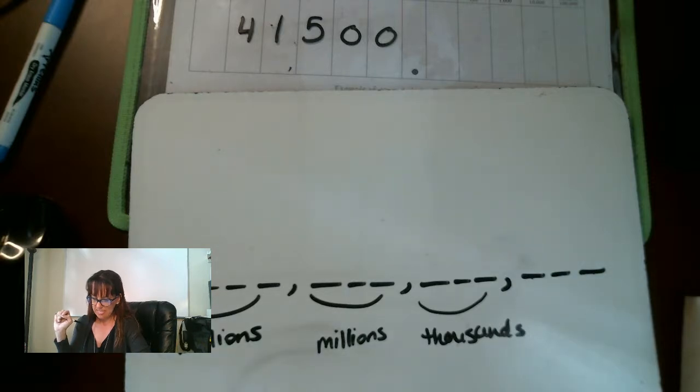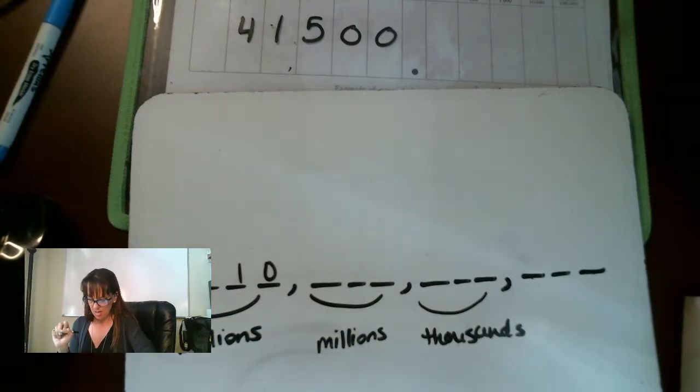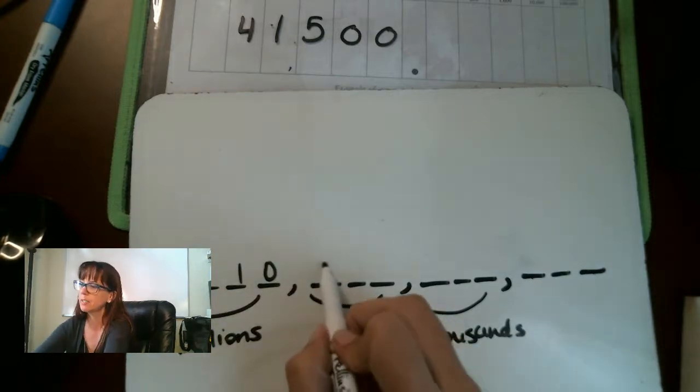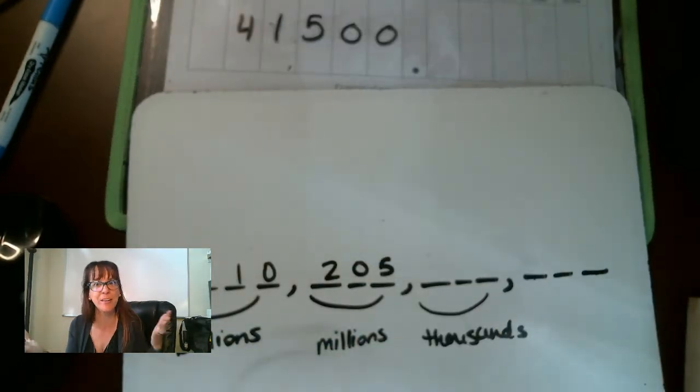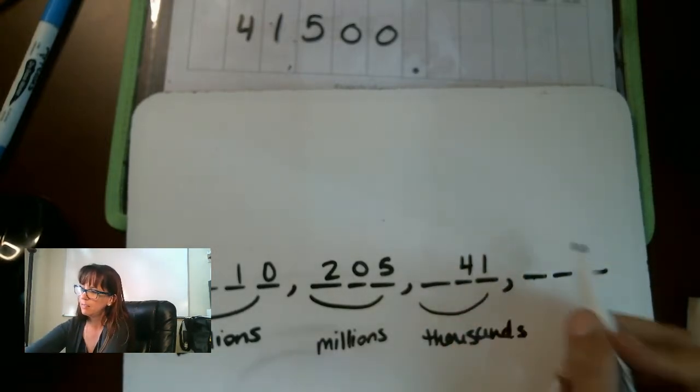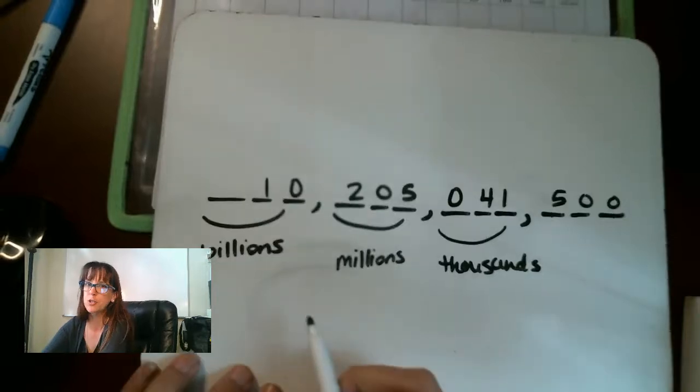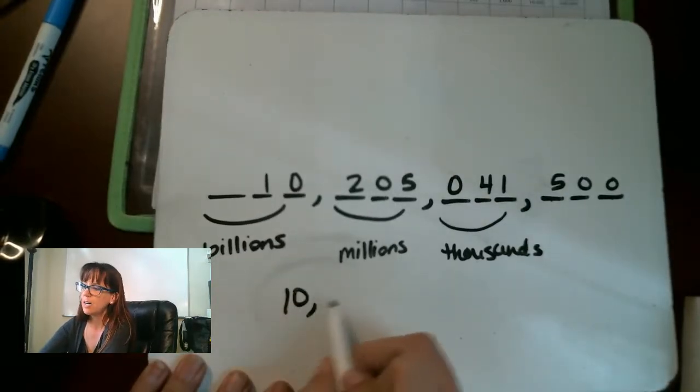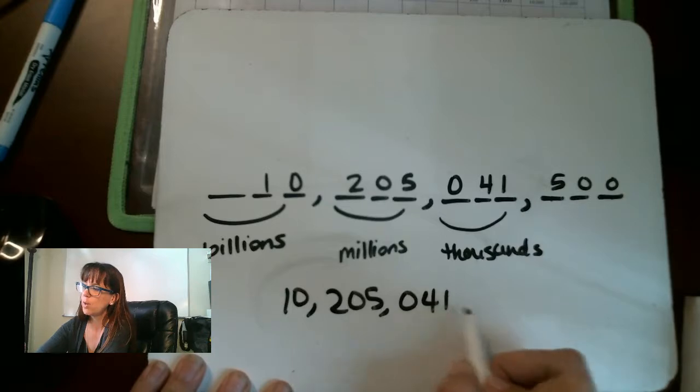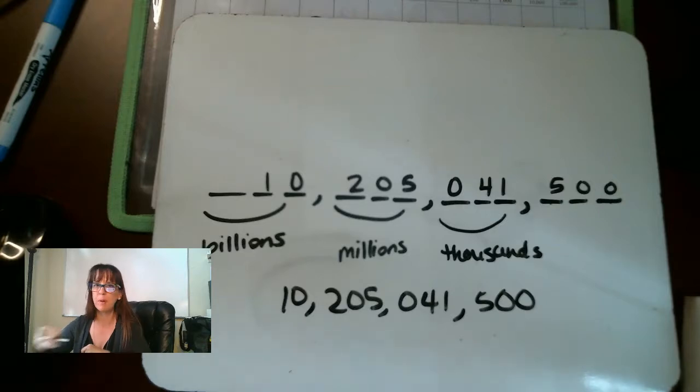So this one's asking us 10 billion. So 10 ends in the billions. We want it to end in the billion column, that's right there. 205 million. 205 million. Oh see, I did it. 205, don't do that. 205 million. 41,500. And you'll notice that we have a gap right there at that 41,000. So we're going to put a zero there. So our answer should look like 10, comma, 205, comma, 041, comma, 500. I'm a teacher, so that's the balance in my bank account, right? Full of jokes.